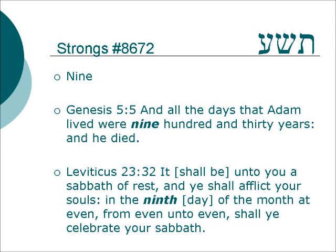The Hebrew word for 9 is Teisha. In Genesis 5:5: 'And all the days that Adam lived were 930 years, and he died.'